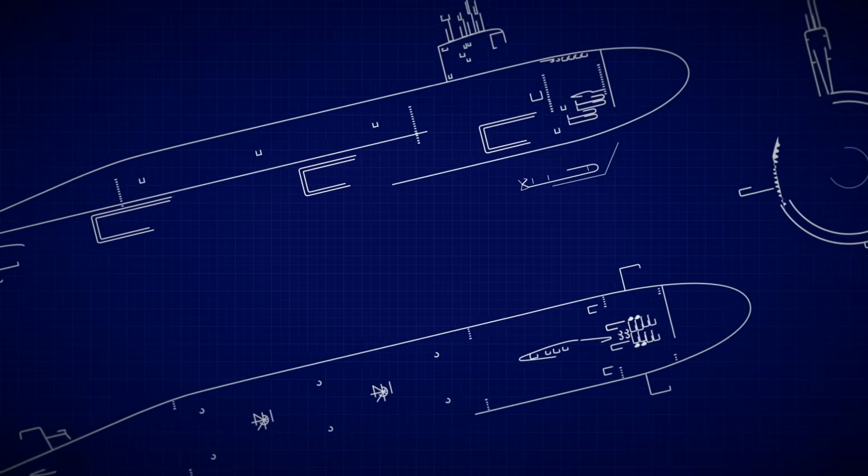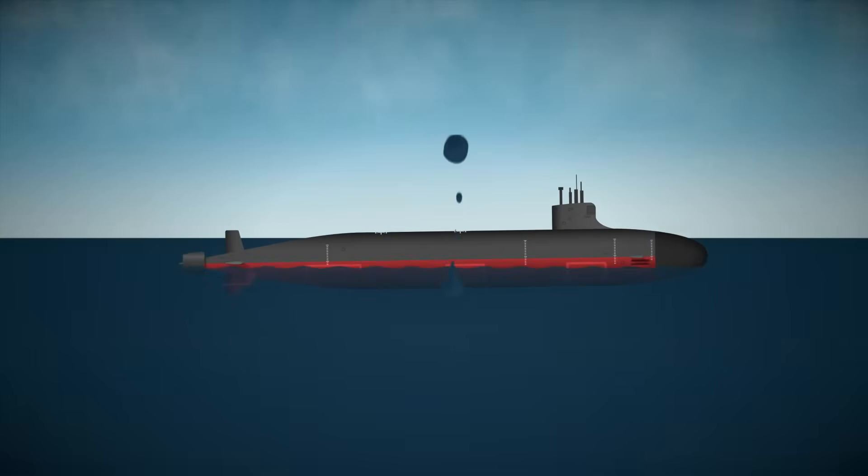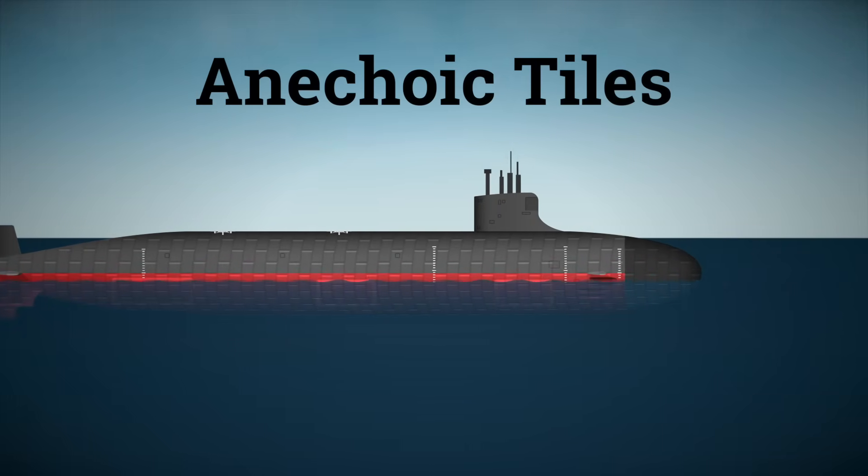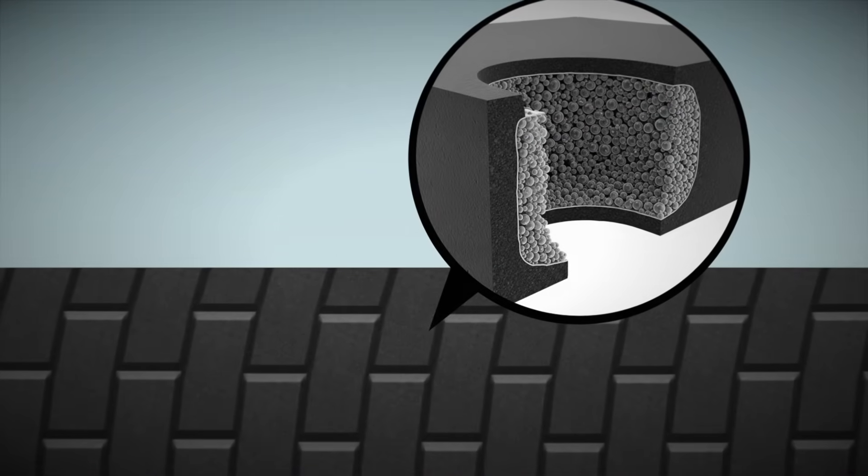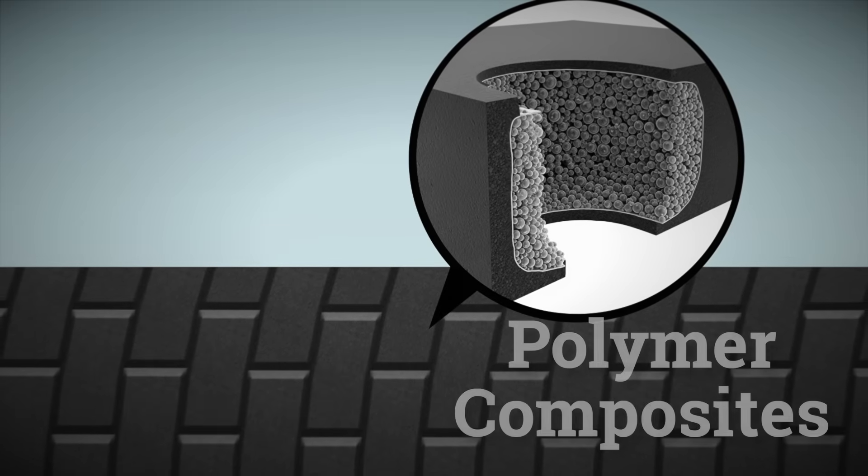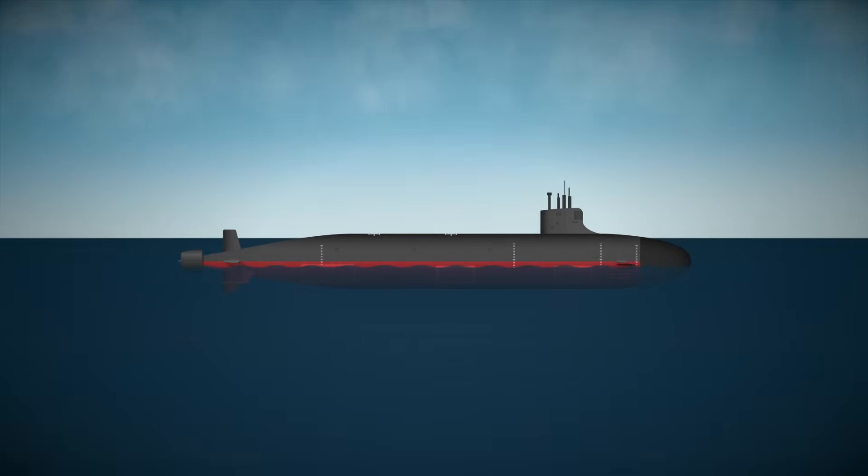Silence isn't just a tactic in submarine warfare. It's an entire design philosophy. To begin with, the hull of a stealth submarine is usually covered in a special layer of anechoic tiles. These sound-absorbing panels are arranged like scales over the metal surface. They're usually made from synthetic rubber or polymer composites, and are often filled with materials like air pockets or micro-bubbles.